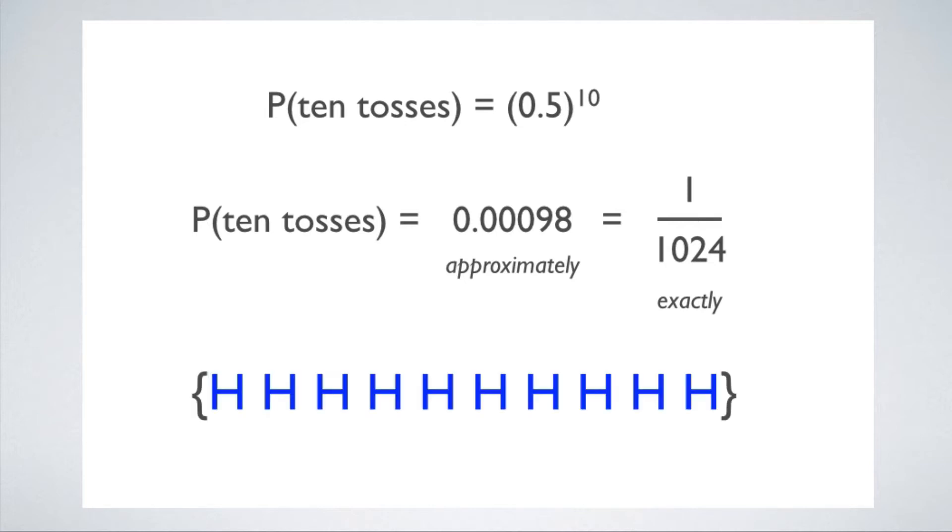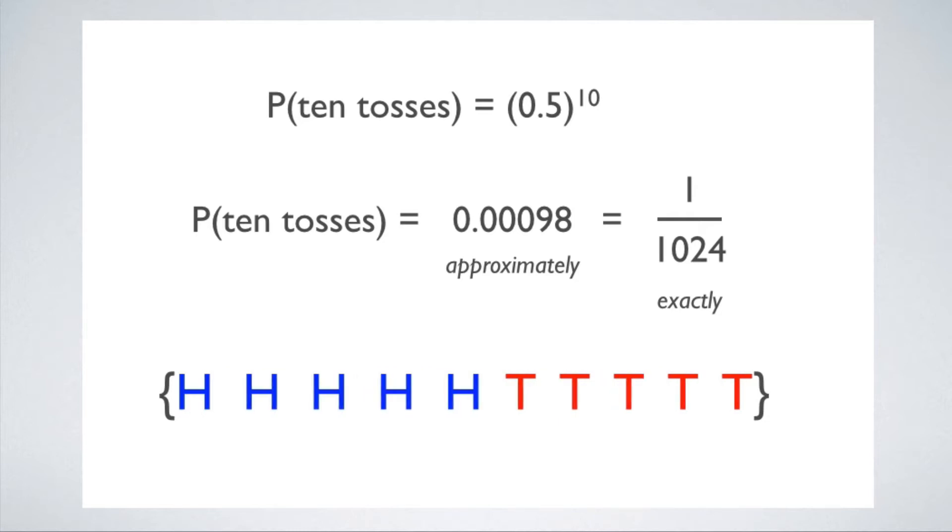So a sequence of all heads has the same probability as a sequence of all tails, which has the same probability as a sequence of alternating heads and tails, which has the same probability as five heads followed by five tails. Or this more typical looking sequence, which looks more like the sort of sequence you'd get if you actually toss a coin 10 times right now. I'd say this is a more typical looking sequence, but it's not a more probable sequence. This specific sequence of tosses is just as unlikely as getting all heads or all tails.